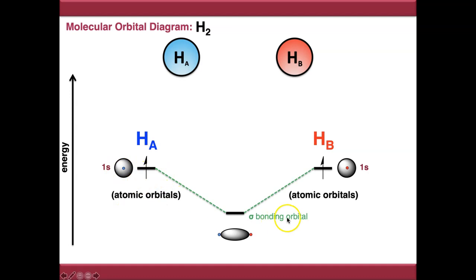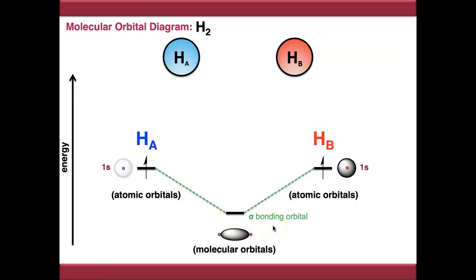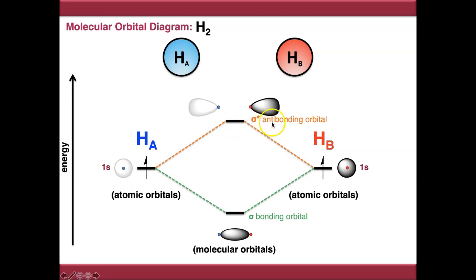If we mix our two 1s orbitals together constructively, we end up with a sigma bonding orbital. Note that this is lower in energy than either of the orbitals that went into making it, because it's a beneficial thing to do — there is constructive overlap and electron density builds up in between the two atoms. If we reverse the phase of one orbital and mix out of phase, the resulting sigma star antibonding orbital is higher in energy than either of the two orbitals that went into making it.